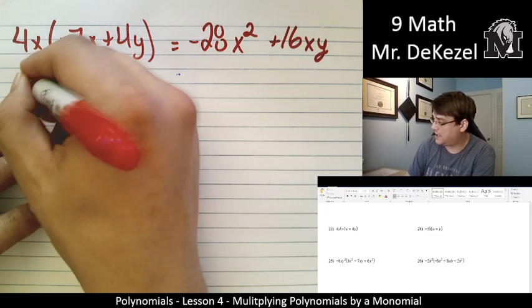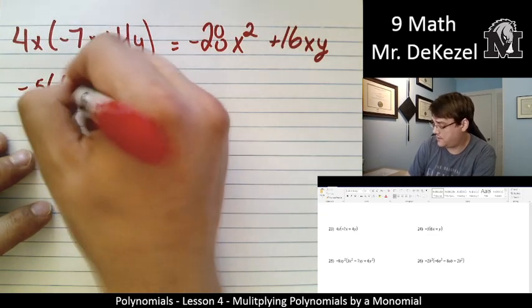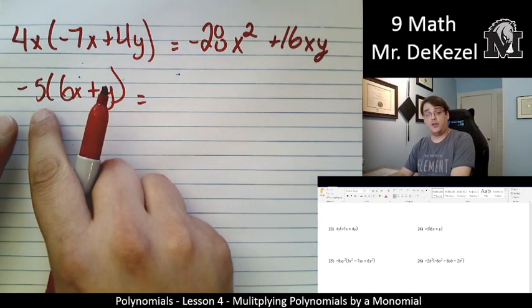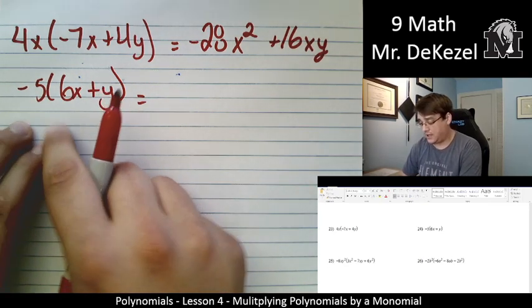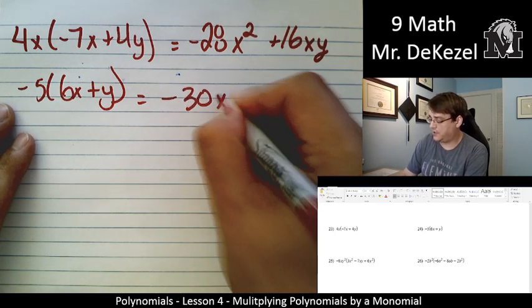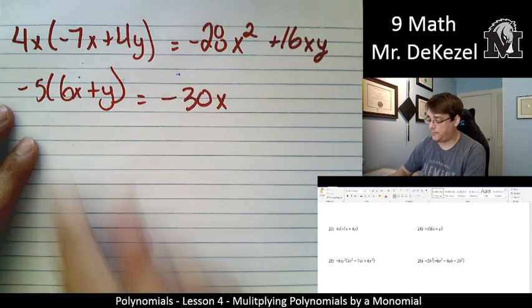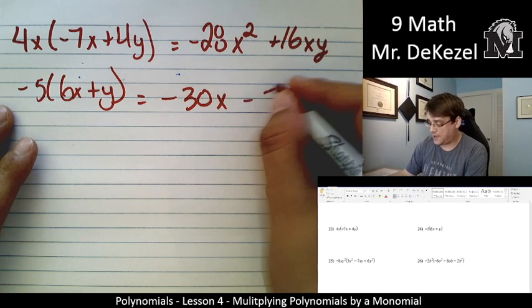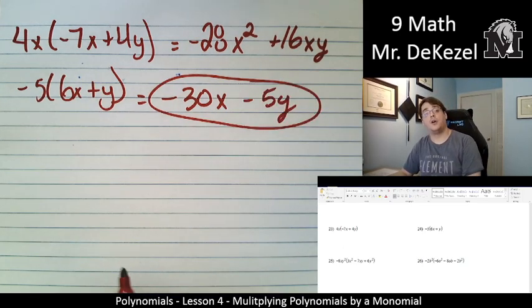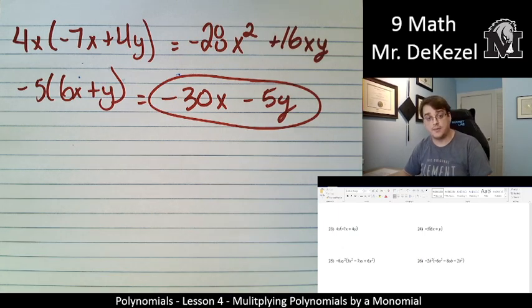Let's do the next one. Minus 5 times 6x plus y. No variables, so we're just multiplying numbers. Minus 5 times 6, that's minus 30. We bring the x along. And minus 5 times y, that's just minus 5y.